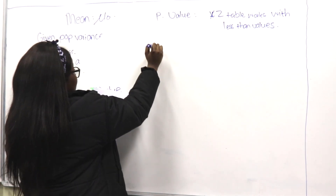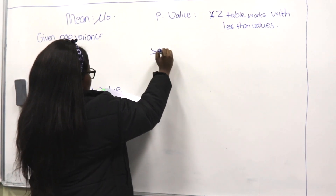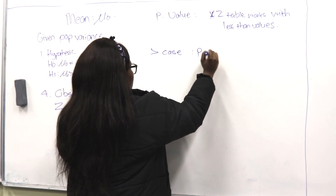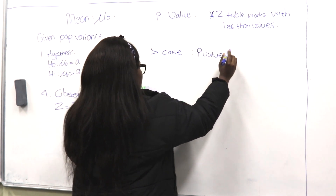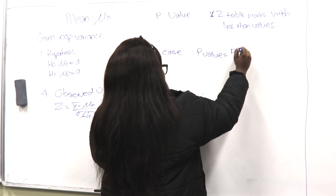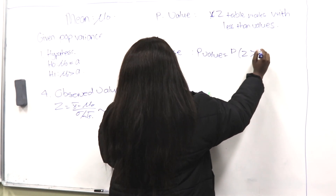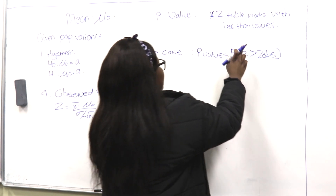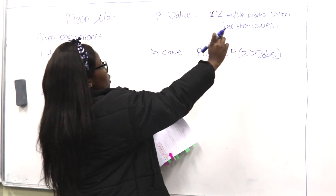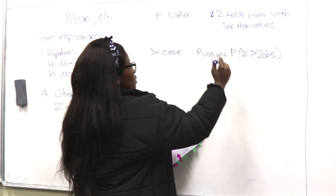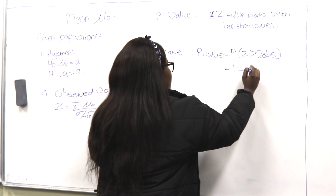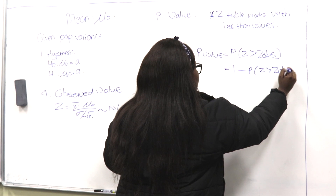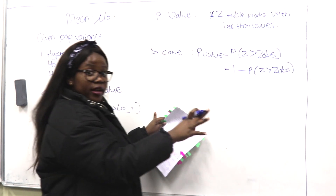In the greater-than case, your p-value equals P(z greater than z observed). But since the z-table works with less-than values, we rewrite it as 1 minus P(z less than z observed), and then calculate accordingly.